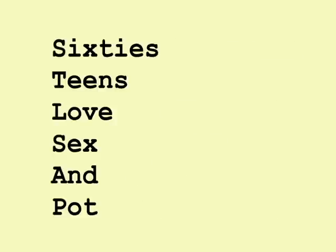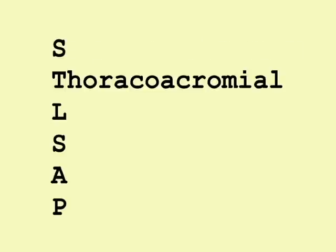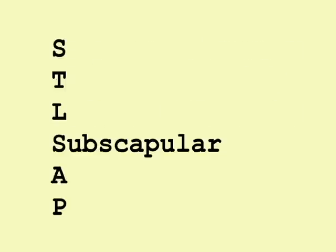60s teens love sex and pot: the initial letter of each word reminds you of the first letter of each anatomical term in order. S — supreme thoracic artery; T — thoracoacromial trunk; L — lateral thoracic artery; S — subscapular trunk; A — anterior humeral circumflex artery; P — posterior humeral circumflex artery.